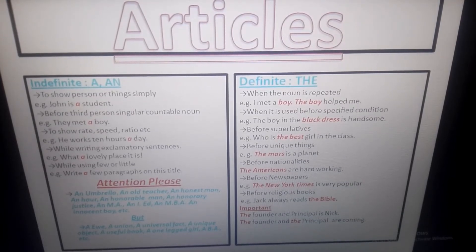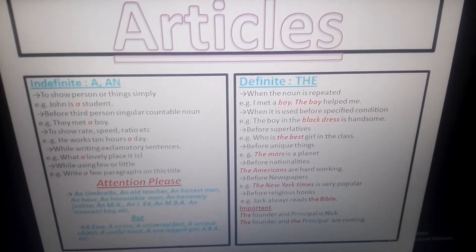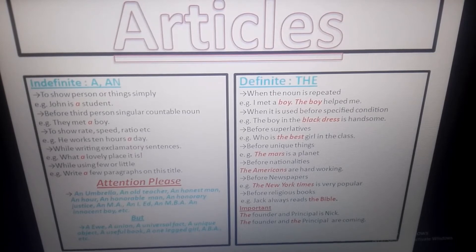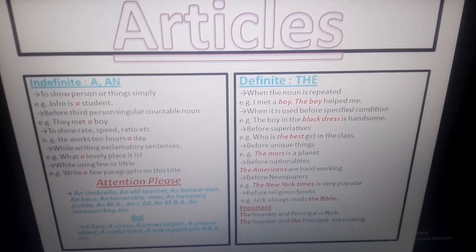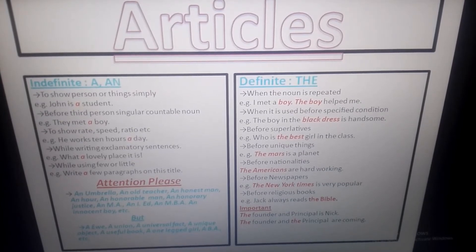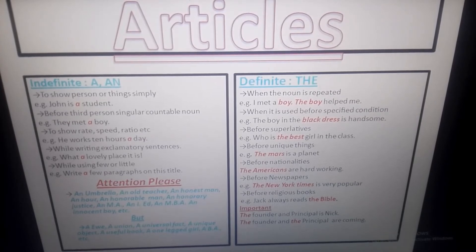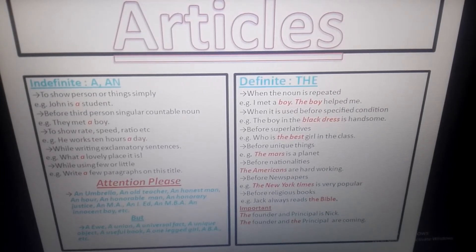The next one: before a third person singular countable noun, we use 'a'. For example, 'They met a boy' — because 'boy' is third person singular and countable, that's why 'a' is used there. Next: to show rate, speed, or ratio, we use 'a'. For example, 'He walks 10 hours a day' — 'day' denotes ratio here.